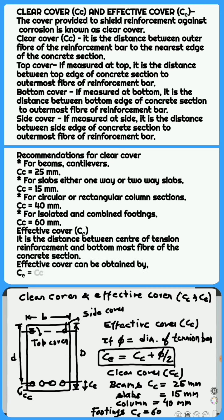For circular or rectangular column sections, clear cover is taken as below minimum value: Cc equals 40 mm.